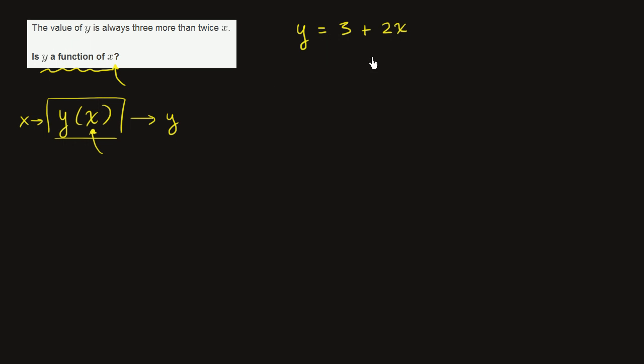Now here, it looks pretty clear that for any input, you get exactly one output. Any input uniquely determines which y. It's not like if you put an x in here, you're not sure what y is going to be. If x is 0, y is 3. If x is 1, y is 5. So this is definitely a function of x.